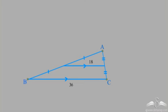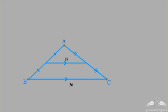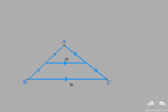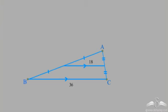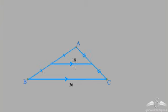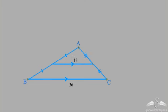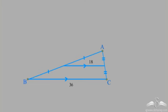Even if I move this triangle, what you'd observe is that the length of the mid-segment will not change because BC is not changing, and the mid-segment is always half the third side. The third side is not changing, so even if I'm changing my triangle, I'm not changing BC, so the mid-segment is also not changing. Remember that the mid-segment is always half of the third side and is parallel to the third side.